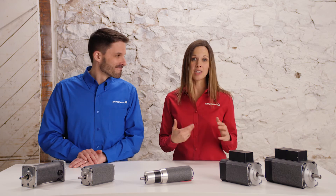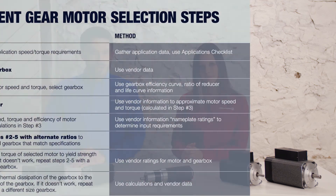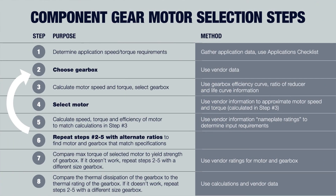The final step after the calculations are complete is to make sure the motor and gearbox interfaces are compatible. You'll need the dimensional drawings for each to do this. That wraps up method one. Let's review our chart. We determined our application speed and torque requirements and selected a reducer, then calculated the motor speed and torque to determine our reducer ratio. Next we selected our motor and calculated the motor speed, torque, and efficiency to match our calculations for the reducer's ratio. The arrow indicates the recalculations we discussed for when adjustments need to be made for reducer ratio and motor size.